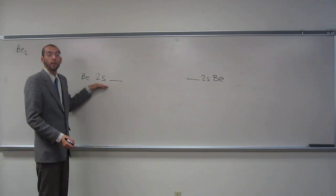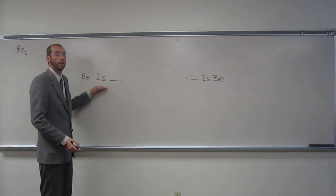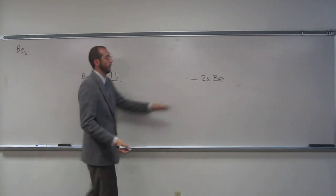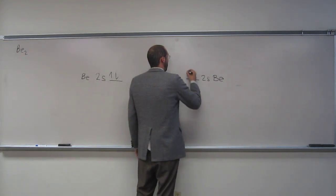So in the Be 2S orbital, how many electrons are there? Two. One, two. And this one? Two. One, two.